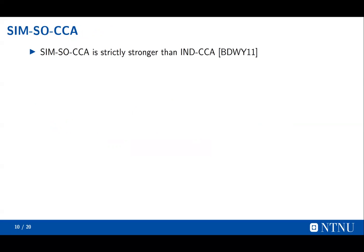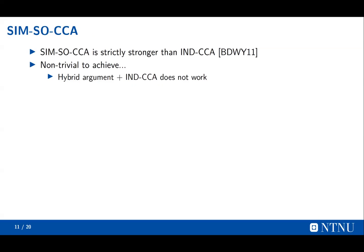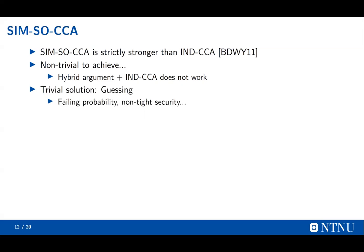It is highly non-trivial to achieve SIM-SO security, because there is a dilemma. If we want to prove security, we should embed some problem instance into the ciphertext. But if we embed the instance into the ciphertext, then we cannot open the ciphertext, because we do not have the randomness. One may wonder if we can use the hybrid argument plus IND-CCA to achieve SIM-SO security, but such a hybrid argument doesn't work, because switching the challenge ciphertext to random means we cannot open it. A naive solution is to guess which ciphertext will not be opened by the adversary, but this solution has some failure probability since the reduction may guess wrong, leading to non-tight security.